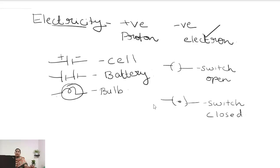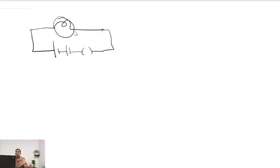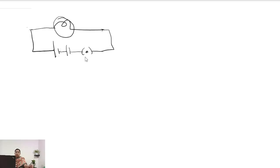Next we have to draw an electric circuit. Here you can see the bulb, the battery, and the switch. The switch is not closed, so the circuit is not complete and the current cannot pass through the circuit. Next we close the switch. When we close the switch, the circuit is complete and the current is flowing through the circuit. As a result, the bulb will glow.